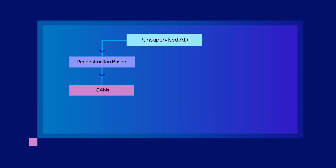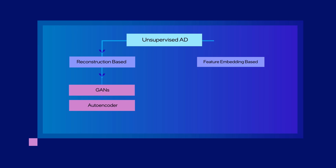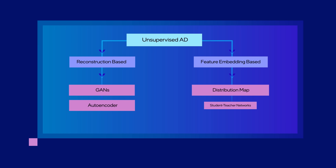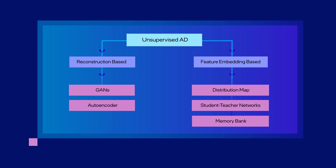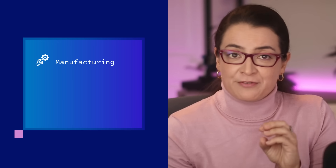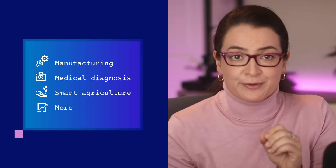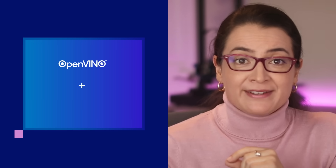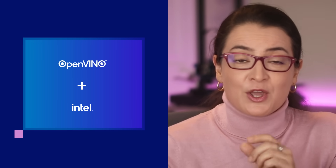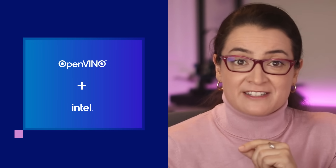Our Anomalib library provides you with multiple anomaly detection algorithms and tools. Use these to build custom end-to-end solutions for use cases across industries — including manufacturing, medical diagnosis, smart agriculture, and more. Combined with OpenVINO and Intel hardware accelerators, you can detect defects faster and more accurately. This leads to enhancing security while improving operational efficiency.